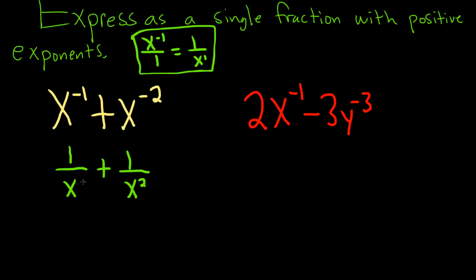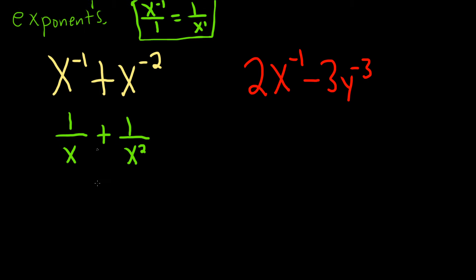Now we have to add these. So we want the common denominator here, or the least common denominator. So x squared is going to be that. We can make this left one here an x squared by multiplying by x over x.